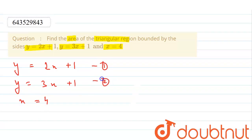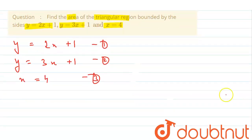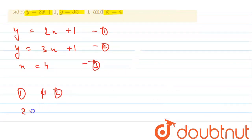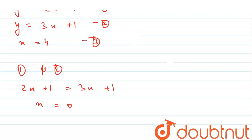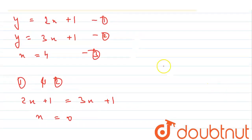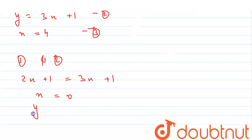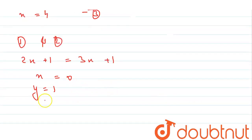If we solve the first and second equations together, we get the intersecting point of these two lines. Since both are equal to y, we can equate them: 2x + 1 = 3x + 1. Taking 2x to the right-hand side gives x = 0. Putting x = 0 into the first equation gives y = 1. So the intersecting point of the first and second lines is (0, 1).